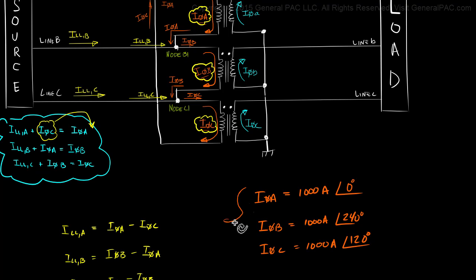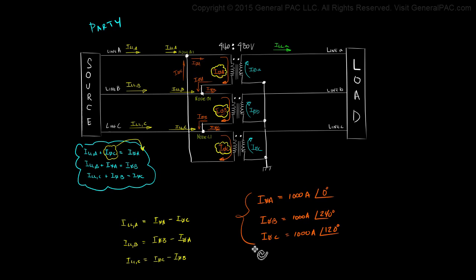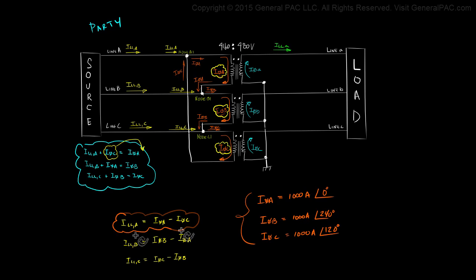Now we're going to draw these phasors. Remember, these phasors are just the currents that are flowing through the primary windings. Keep in mind the big picture of what we're trying to solve. We're performing the phasor analysis because we want to relate the line current with the phase currents. We're doing a nodal analysis on node A1, and what we're actually trying to solve with our phasor diagram is line current A equals phase current A minus phase current C.